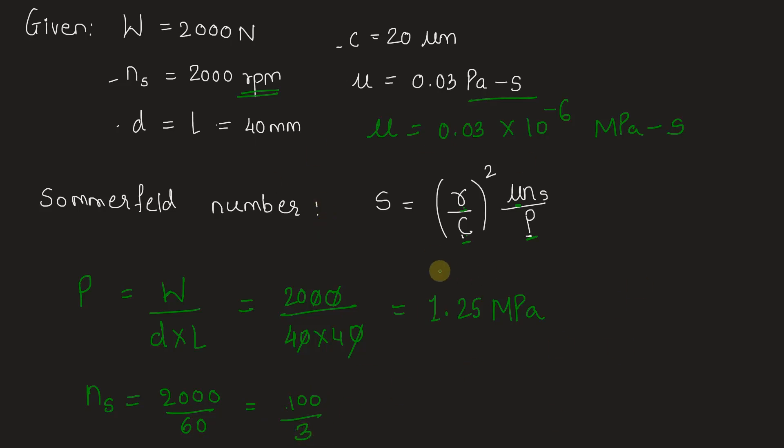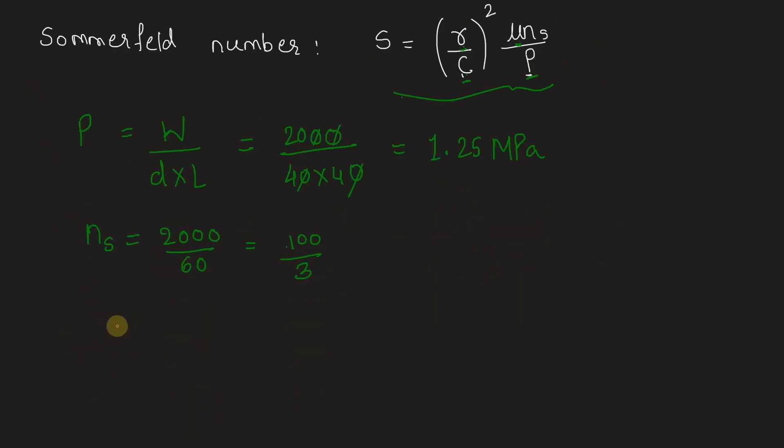Let's substitute all these values in the Sommerfeld number formula. Finally, we have Sommerfeld number S equals radius (half of diameter, that is 20 millimeters) divided by clearance (20 micrometers converted to millimeters: 20 times 10 to the power minus 3), whole squared, times dynamic viscosity 0.03 times 10 to the power minus 6, which we can substitute as